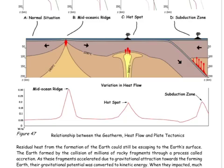In the answer to why the heat flow varies across the Earth's surface, it all depends on plate tectonics. For example, where the two plates pull apart, the hot interior of the Earth is nearer the surface, which brings more heat to the surface. Also, the second reason is that magma is generated and erupts onto the surface, again bringing more heat to the surface of the Earth.